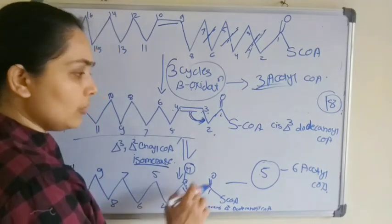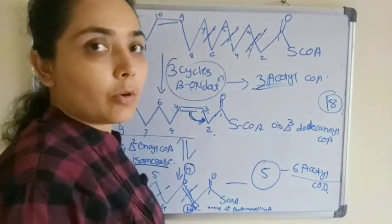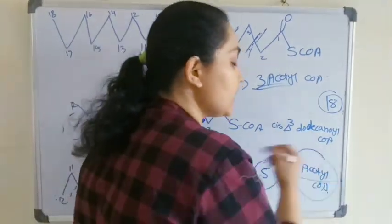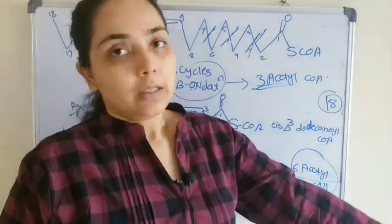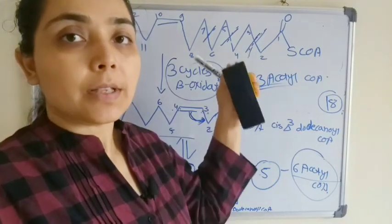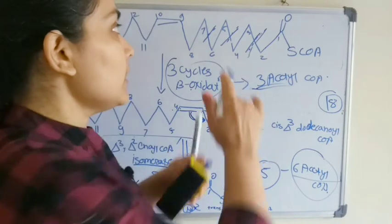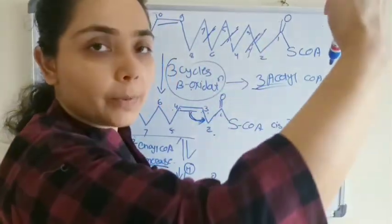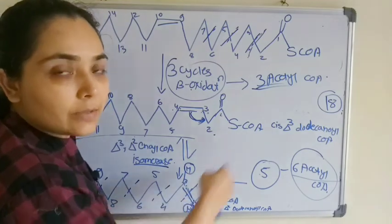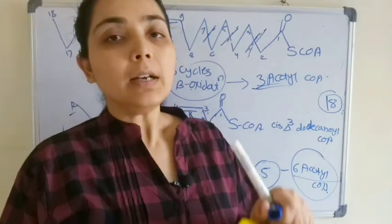After isomerization, five more cycles of beta oxidation take place. Five cycles yield five acetyl CoA, and the final two carbons give one more acetyl CoA, totaling six acetyl CoA from this stage. Combined with the three from the first stage, a total of nine acetyl CoA are obtained from the beta oxidation of oleic acid. These acetyl CoA molecules then enter the Krebs cycle (TCA cycle).